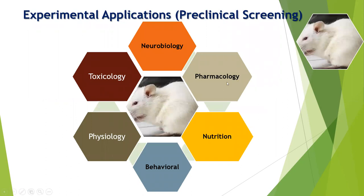Several disease models are available for rats, as they are sensitive to various types of drugs. These include toxicological evaluation, neurobiological evaluation, pharmacological evaluation, nutritional evaluation, behavioral studies, and physiological parameter studies. In preclinical research, rats are used for screening various drug activities related to particular diseases, and standardized disease models are already reported for different diseases using rats as experimental animals.